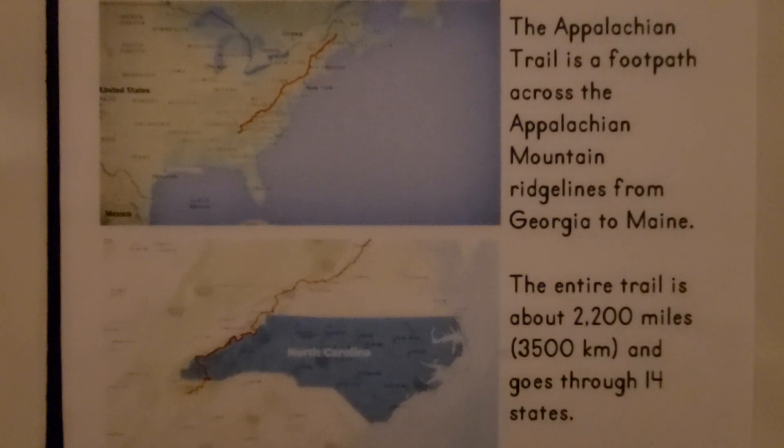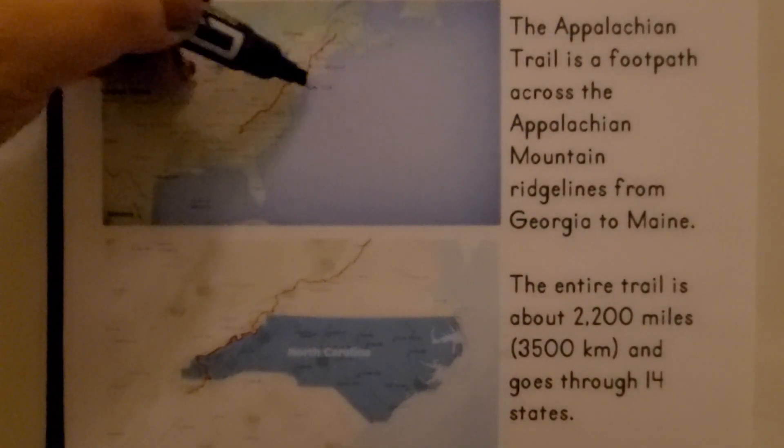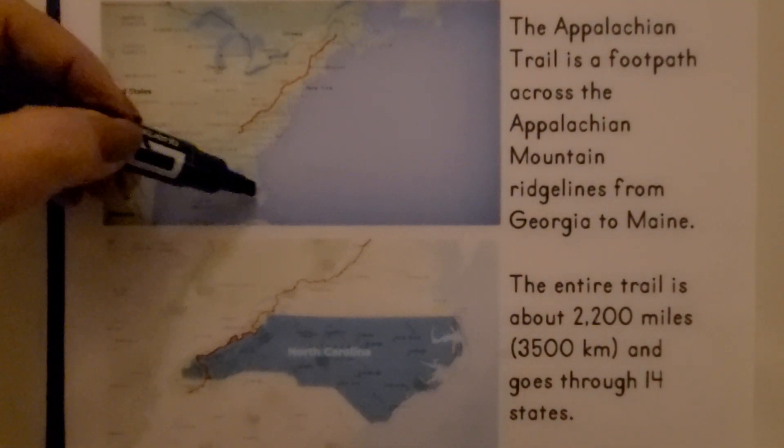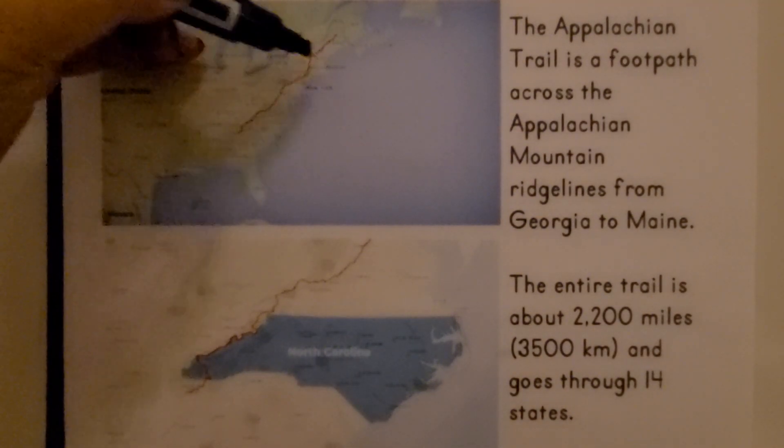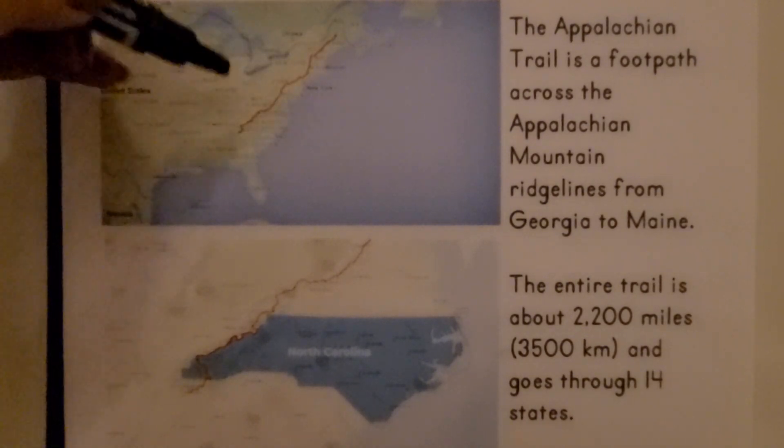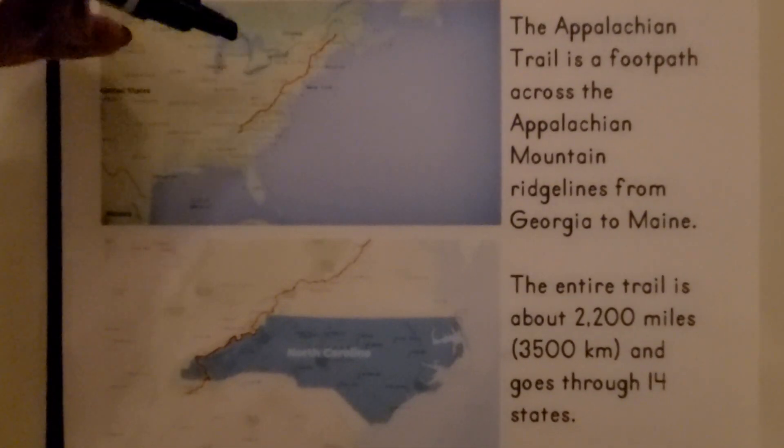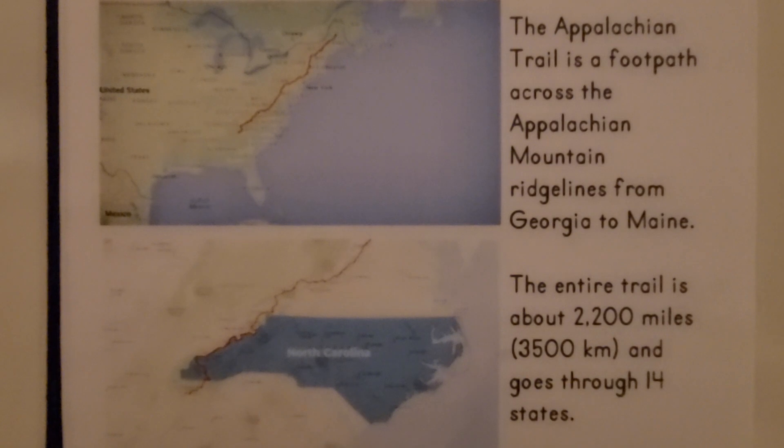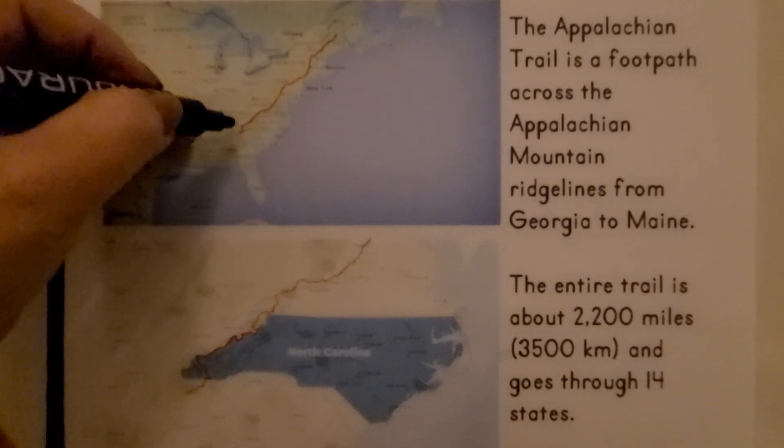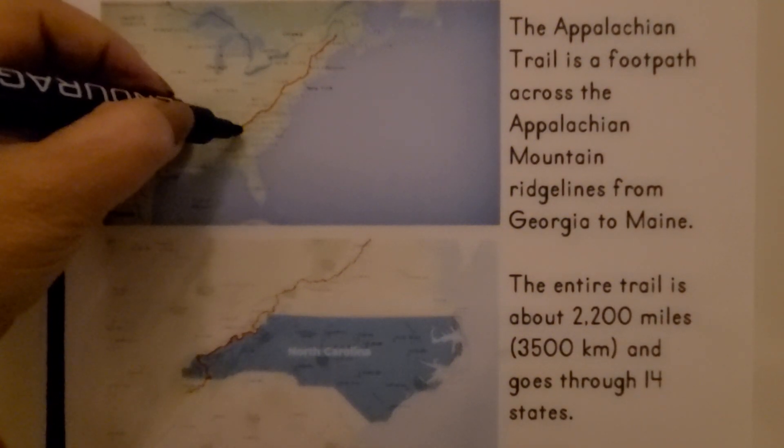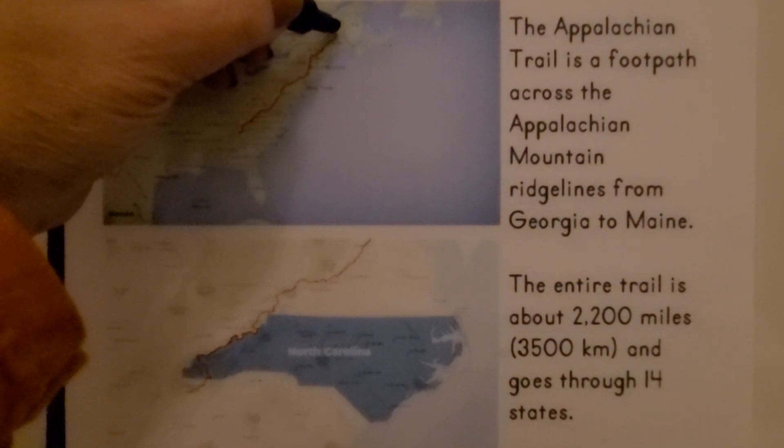To help you picture our next word problem, we're going to do a real quick little geography lesson. You can see this is the east coast of the United States. Here's Florida, here's Canada, New York is right here. This red line right here is the Appalachian Trail. It's a footpath across the Appalachian mountain ridgelines from Georgia to Maine. It goes from the north part of the state of Georgia all the way up into the state of Maine.